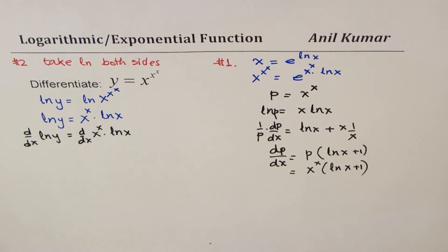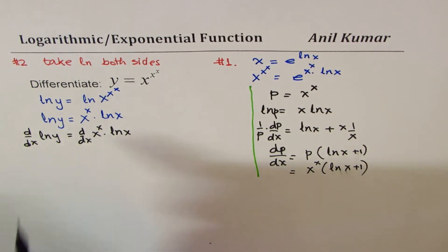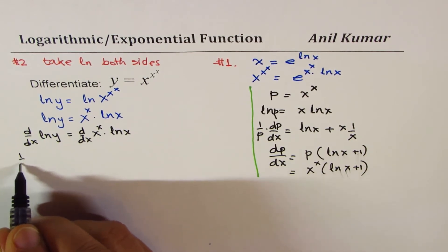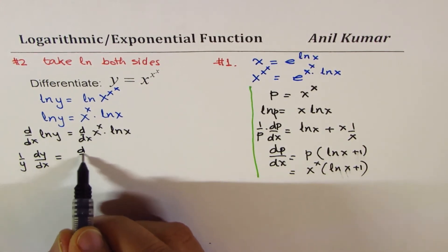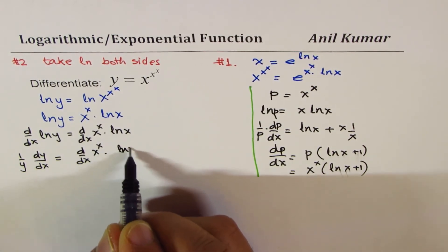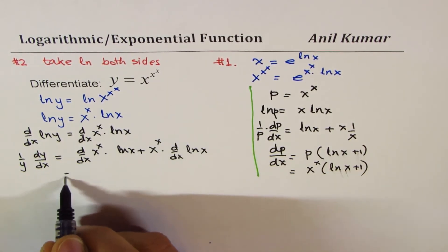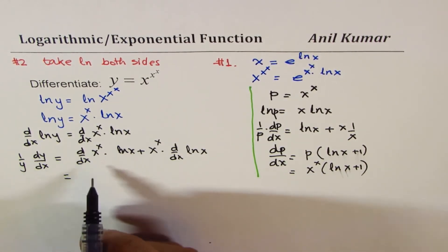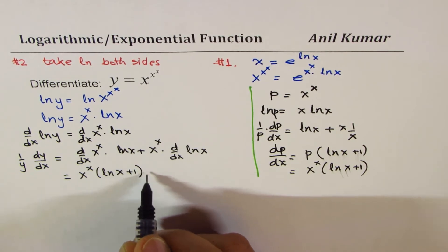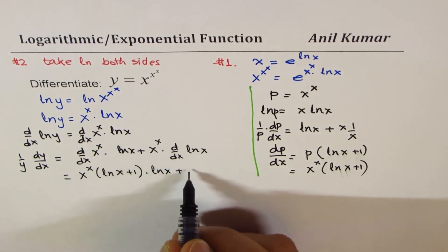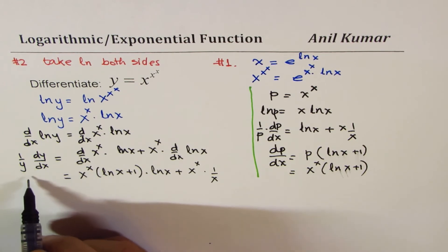We will use this derivative in our main calculation. So 1 over y times dy/dx equals, applying the product rule: derivative of x to the power of x times ln x, plus x to the power of x times the derivative of ln x. Substituting, we get x to the power of x times (ln x + 1) times ln x, plus x to the power of x times 1 over x.